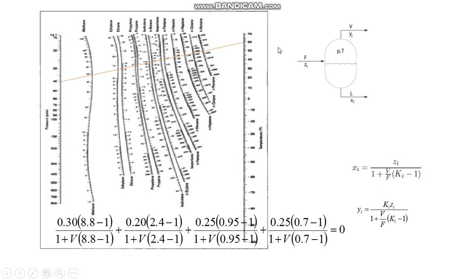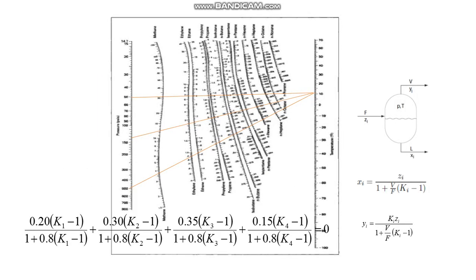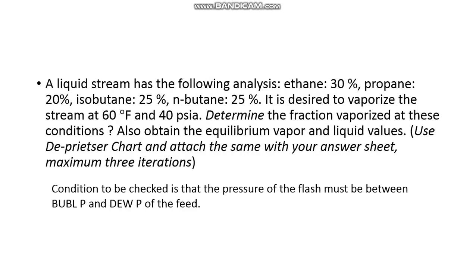So another kind of problem for flash calculation using De-Priester chart is F is given, Z is given, P is given, T is given. We are supposed to find V, L, X, and Y. Mathematics remain same. Only thing is you iterate upon V here, whereas in the previous set of example, you iterate upon the value of either pressure or temperature which is not given.